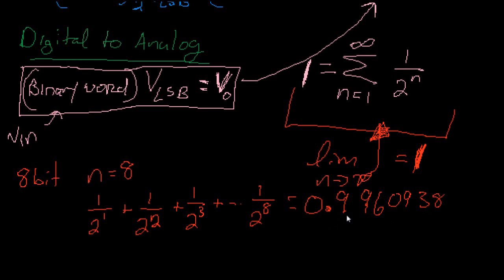So, you can tell it gets really close to 1. If you want to get closer to 1, you can add in one more term. So if we add in 2 to the negative 9 — adding one bit of information would yield plus 1 over 2 to the 9th. We include this term here.